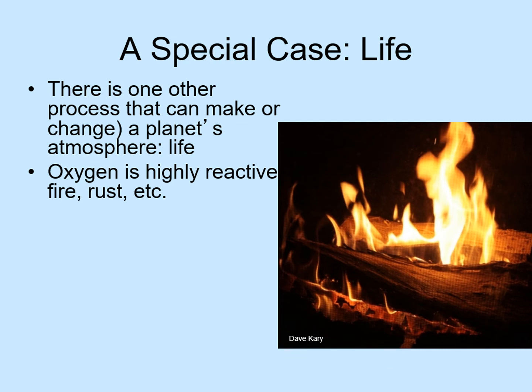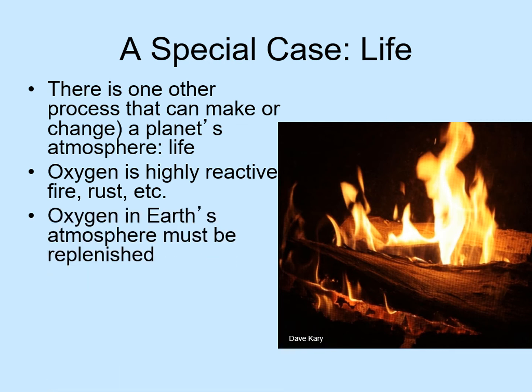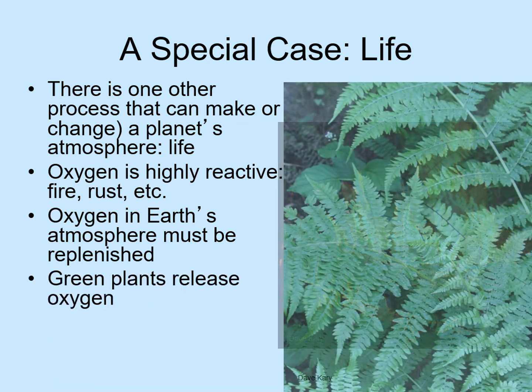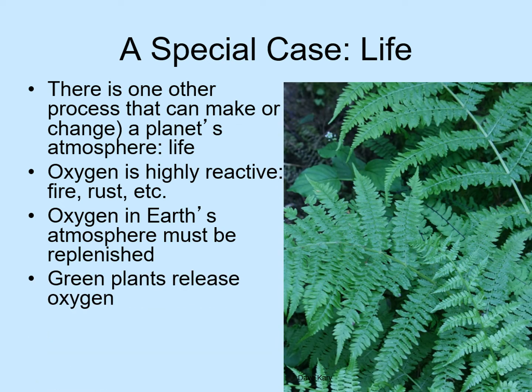But if oxygen gets tied up in compounds this easily, then there has to be some way of replenishing it in our atmosphere — otherwise, in a short time, there just wouldn't be any. Fortunately, here on Earth, oxygen is being replaced all the time through the process of photosynthesis. Green plants and blue-green algae are constantly taking in carbon dioxide, one of the most common gases in other terrestrial planets, and releasing oxygen. The carbon goes into making the plants themselves.